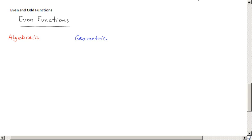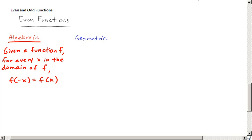There's an algebraic way of explaining it and a geometric way of explaining it. So the algebraic description is this. Given a function f, for every x in the domain of f, you have f of negative x equals f of x.